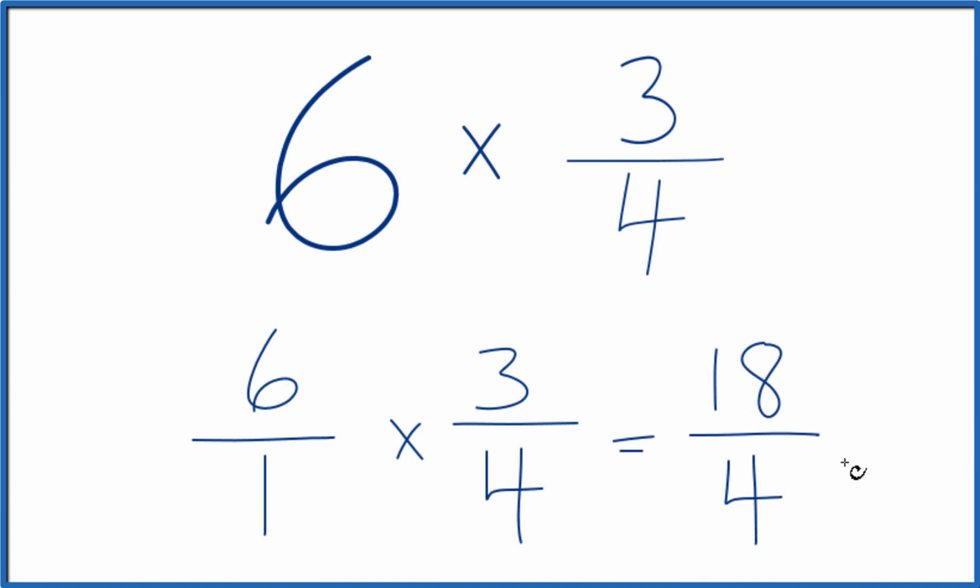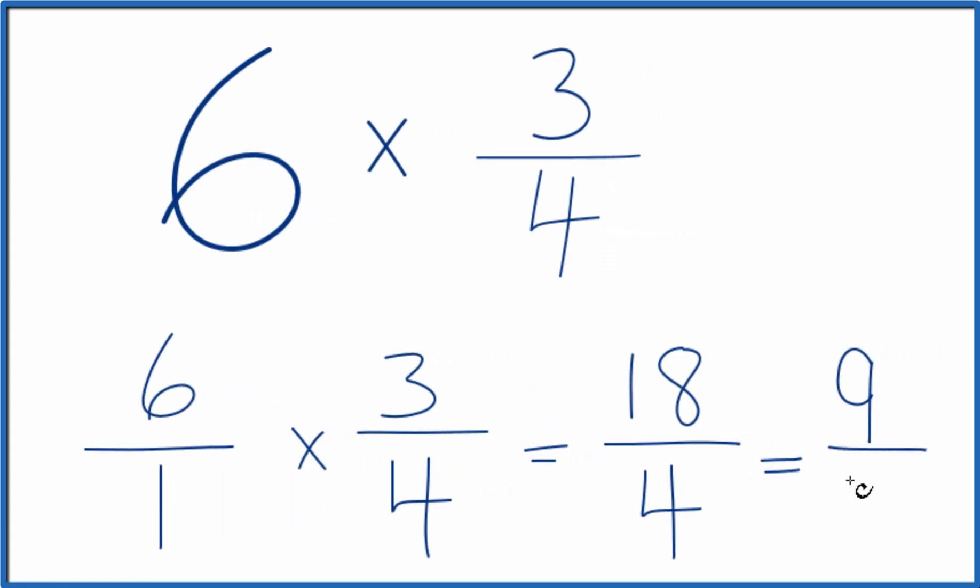These are both even numbers. So let's simplify it. Divide both by 2. So that's 9 over 2.